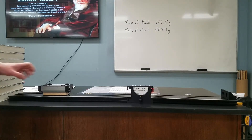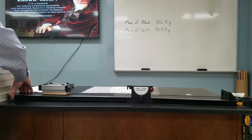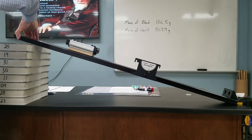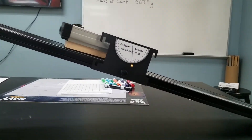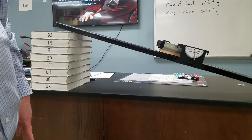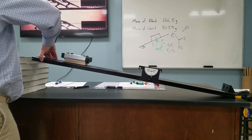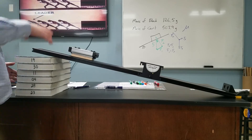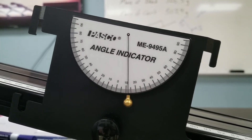Here's our trial with the felt side down with our cart on top. Raising this up until it breaks loose and starts moving on its own — right there, and the angle measurement. Trial three, felt side down static friction — there's the angle for trial three, felt side down static friction.